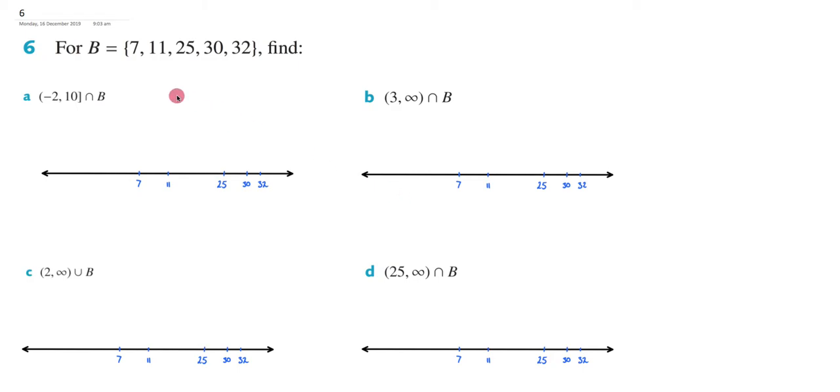Alright, so we are doing question 6 of exercise 5a, and in question 6 they give us the set B, which is 7, 11, 25, 30, and 32, and then in the questions they ask us to find,